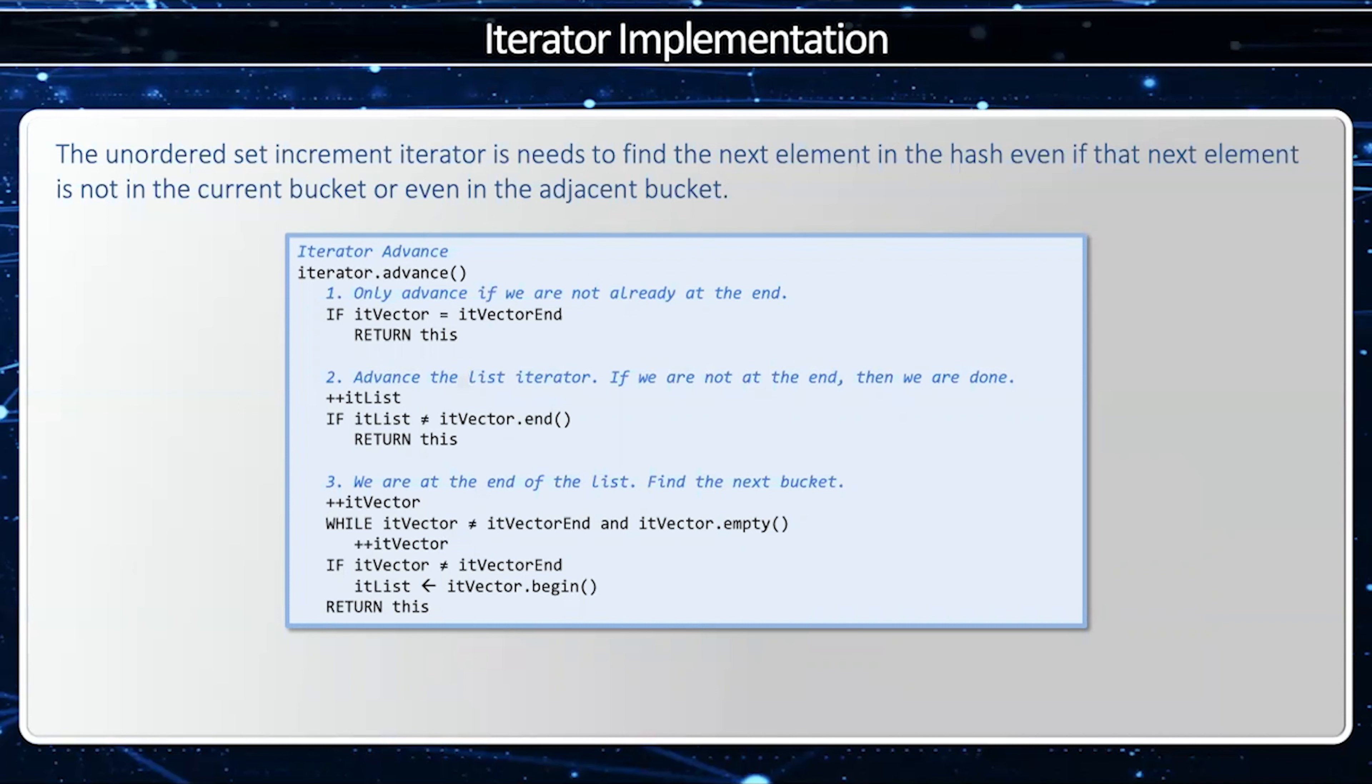Case number three, if I've gotten to the end of the list then I need to find the next bucket. So I need to continue iterating through the vector until I find a bucket that's not empty and when I do so then I create my list iterator at the beginning of that element and then I go from there.